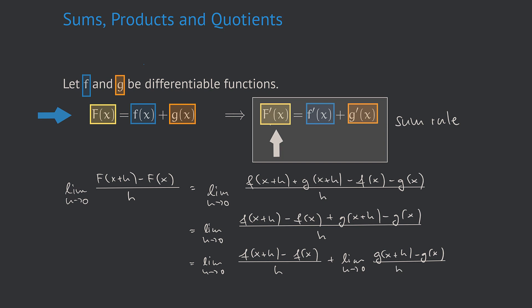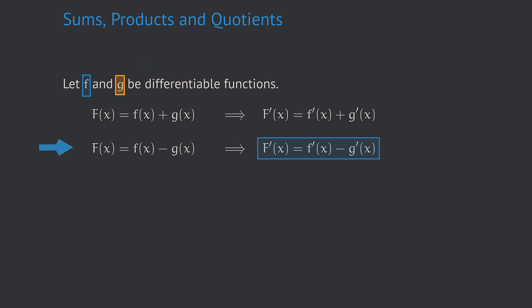Now we have two differential quotients: one for f which is f prime of x, and the other for g which is g prime of x. We have proven the sum rule. In a very similar way we can show that a similar rule holds for the difference of functions. If capital F is the difference of f and g, the derivative of capital F is the difference of the derivatives of f and g.